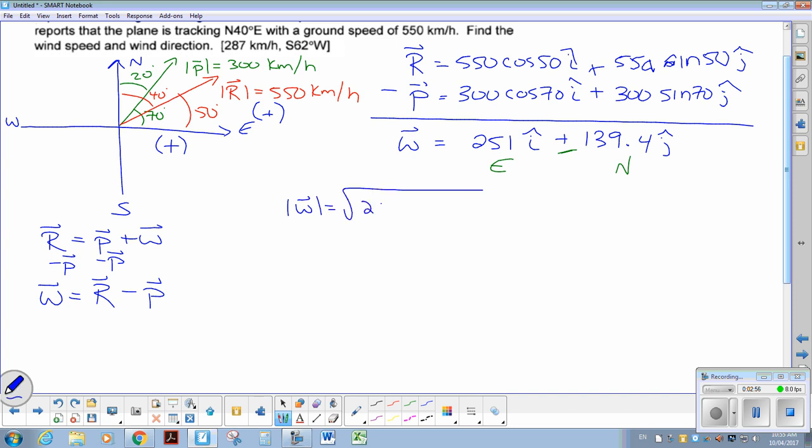So finding the magnitude of the wind, square root of your x component squared and your y component squared. So plugging that into my calculator, we get 251 squared plus 139.4 squared. So I get 287, that's kilometers an hour.